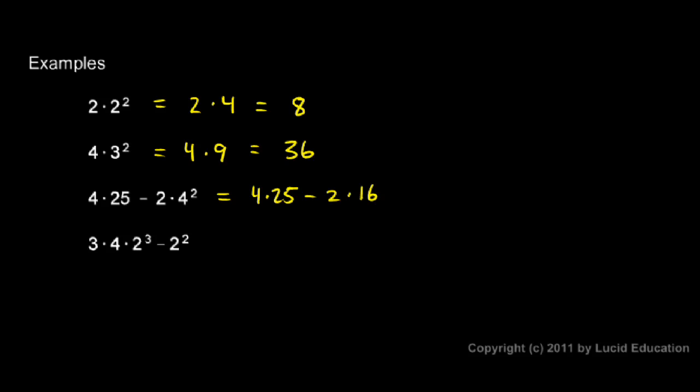But the rules say multiplication and division get done first, left to right, and then the addition and subtraction. So I'm going to rewrite this problem again. But I'm going to perform these two multiplications as I do so. 4 times 25 is 100. And then I have the minus right here. And then 2 times 16 is 32.